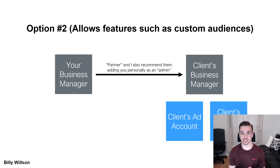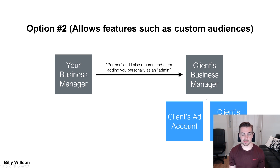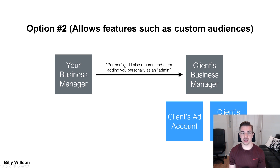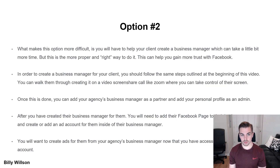Here is Option 2, which is the preferred and better way to do it properly. The downside is it takes a little bit longer. This option unlocks features such as custom audiences — if you don't have a Business Manager hooked up to an ad account, it will not let you create custom audiences, upload an email list, or create lookalike audiences. So you have your Business Manager already created, and now you'll also need to create a Business Manager for your client, or see if they already have one. To create their Business Manager, repeat the same process we did for yours.